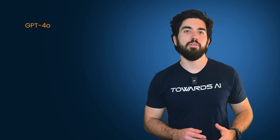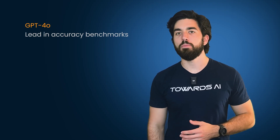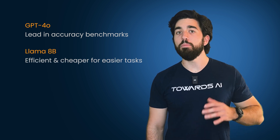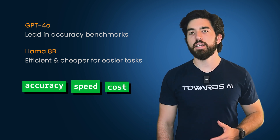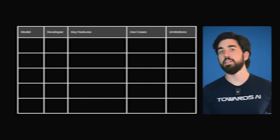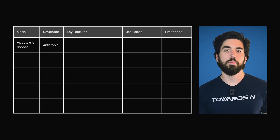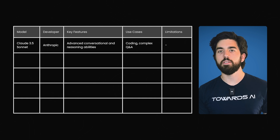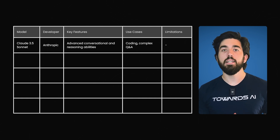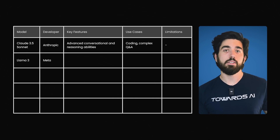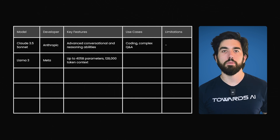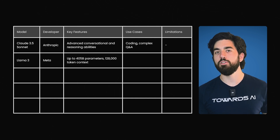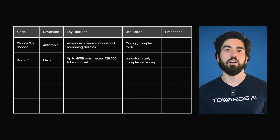Let's talk about some differences between popular LLMs. For example, models like GPT-4o might lead the pack in certain accuracy benchmarks, while smaller models like Llama 8B can be more efficient and much cheaper for easier tasks. Accuracy, speed, and cost — each of these factors impacts which model is best for a given situation. Claude 3.5 Sonnet by Anthropic is designed to handle complex conversational tasks and reason through questions; I really love it for coding and writing. Llama 3 by Meta is the latest version of the Llama series with models ranging up to 405 billion parameters, with an expanded context length of 128,000 tokens, making it particularly effective for handling long-form text.